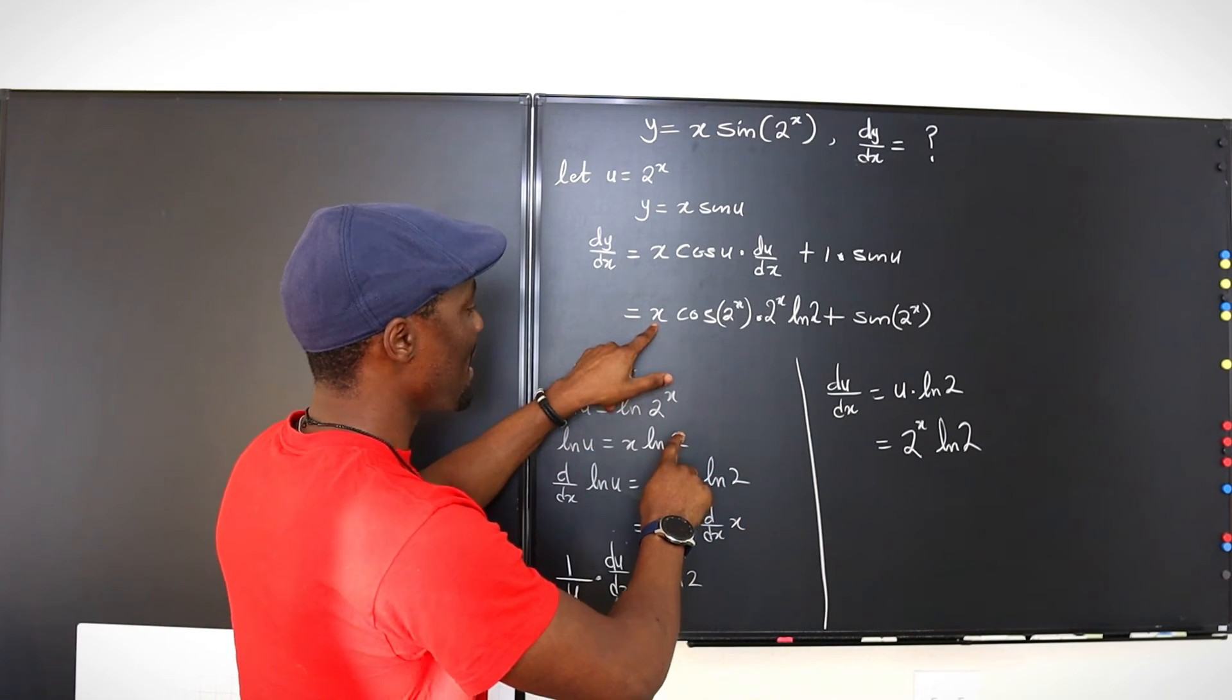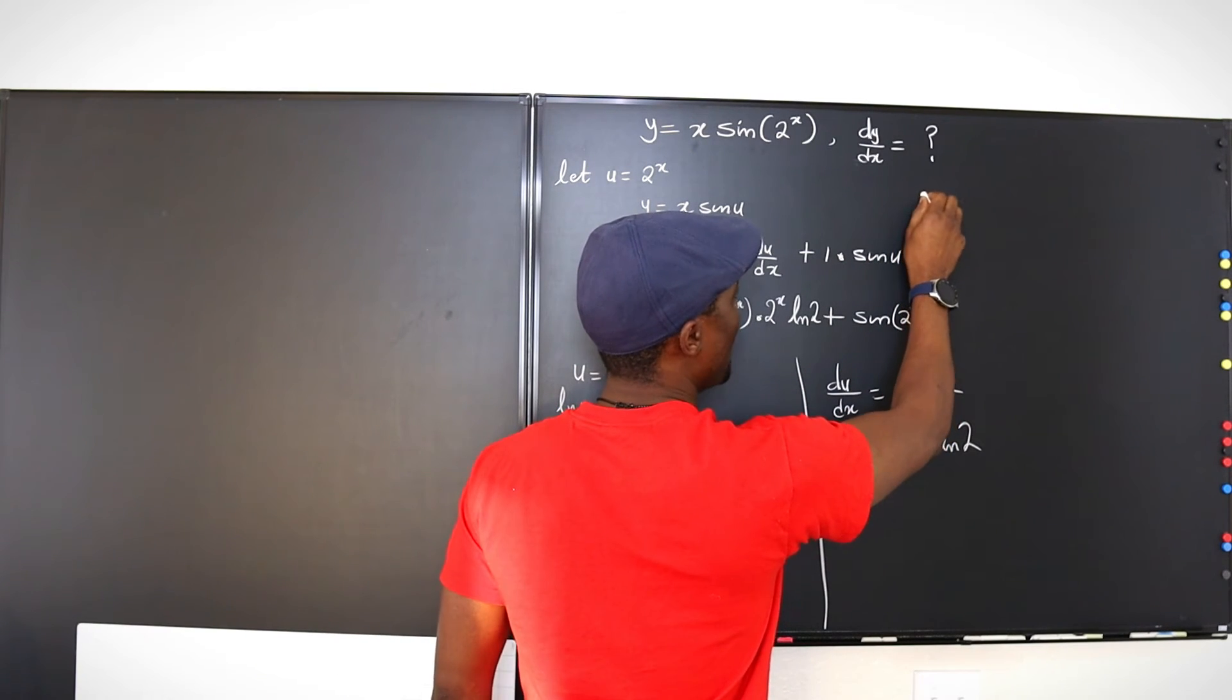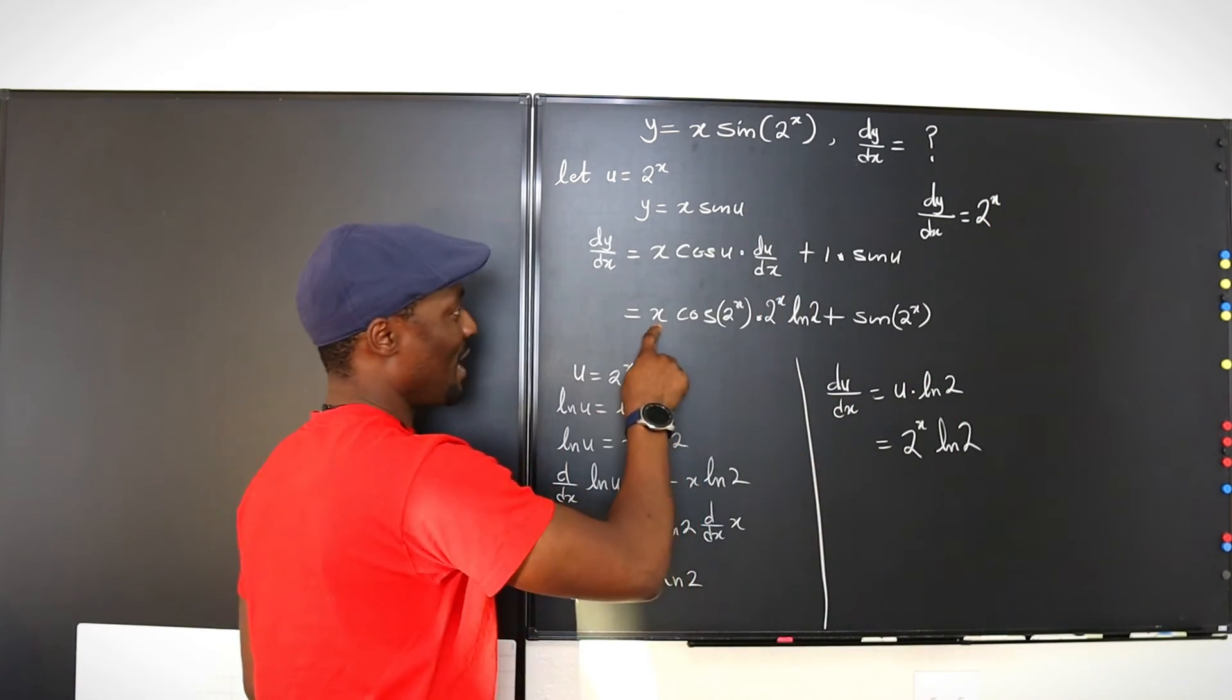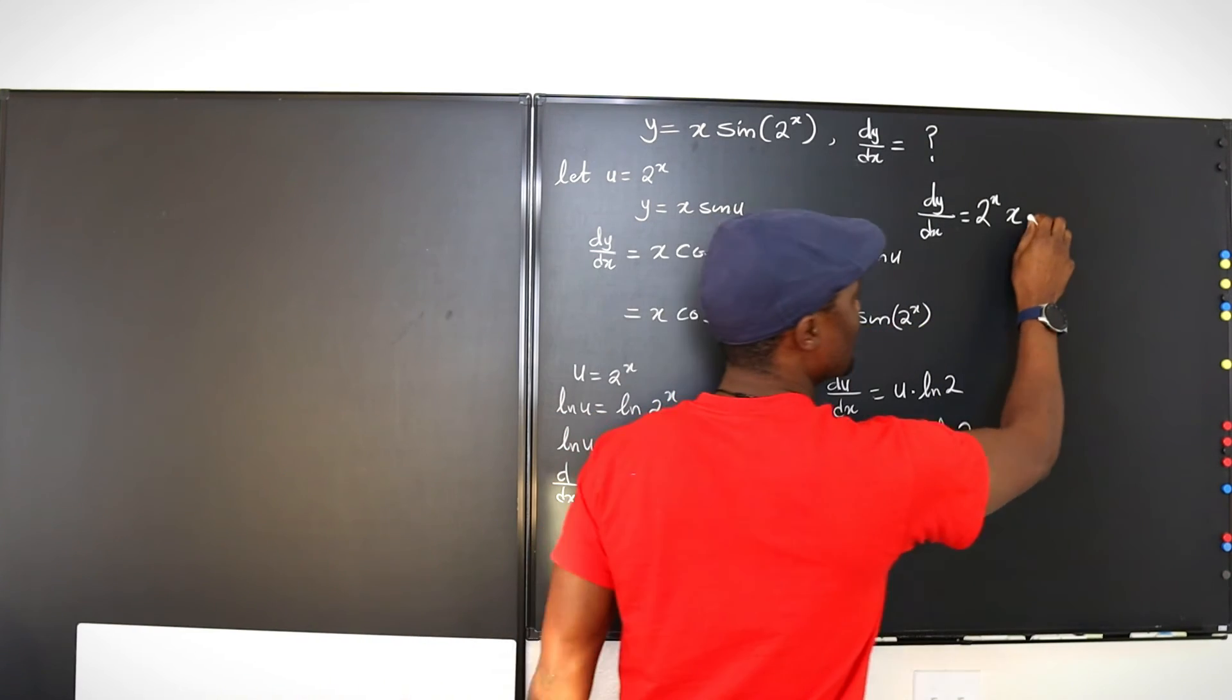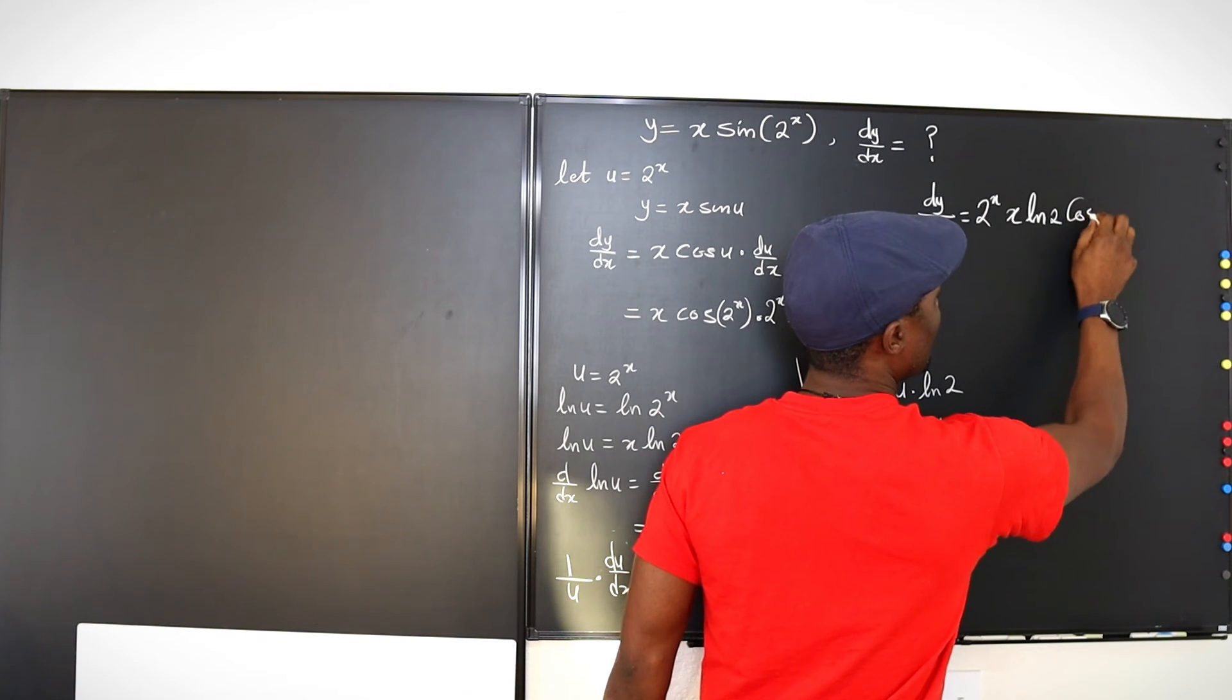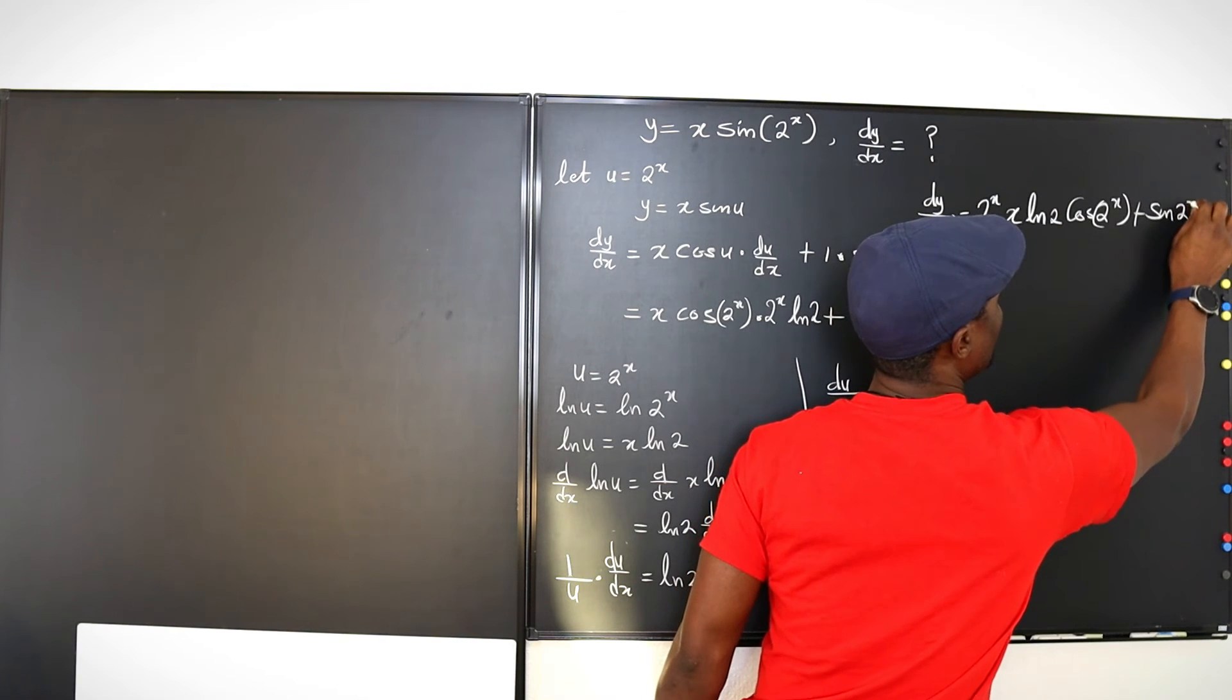So I'm going to write it as x times 2, or 2 to the x times x. Let's write it this way. dy dx, finally, dy dx equals 2 to the x multiplied by x multiplied by ln 2 multiplied by cosine 2 to the x plus sine 2 to the x.